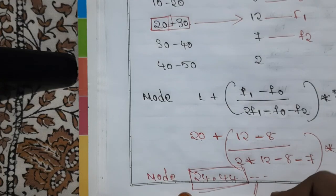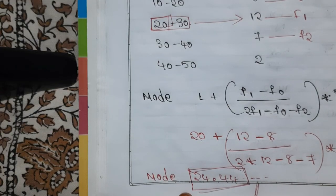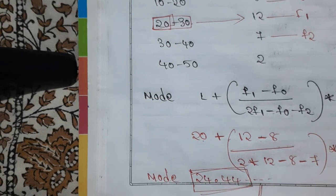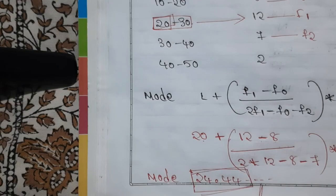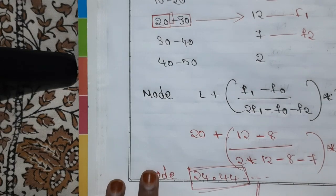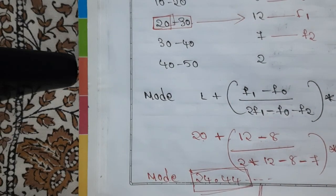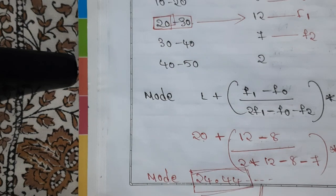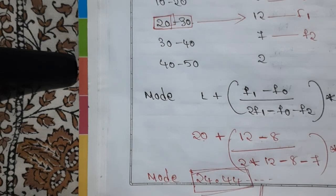We are now done with mean, median and mode in continuous series. By watching both Part 1 and Part 2 you will be perfect with the calculation in both discrete and continuous series. If you have any doubts, let me know in the comment section. For notes, text me on Instagram at Learn With Sahira. See you in the next video, bye bye!